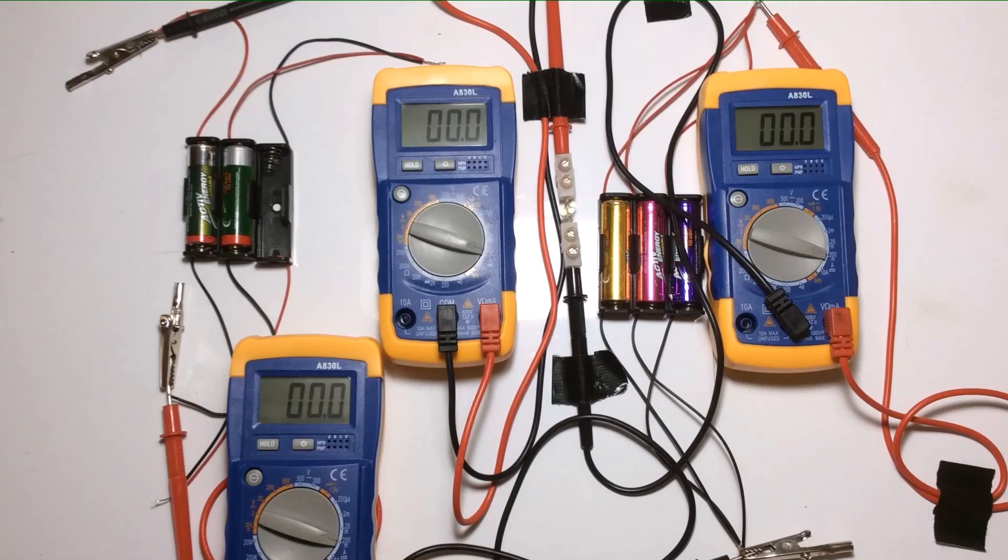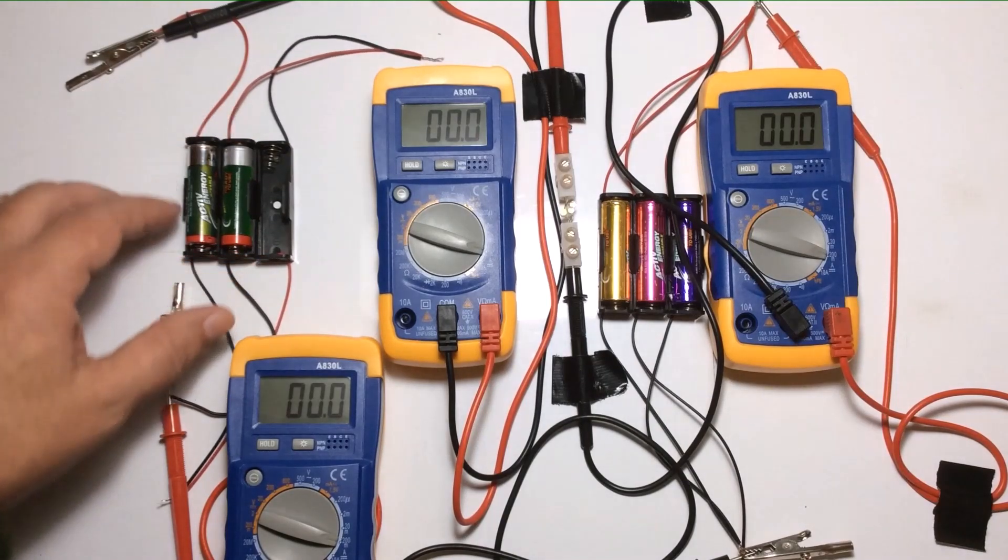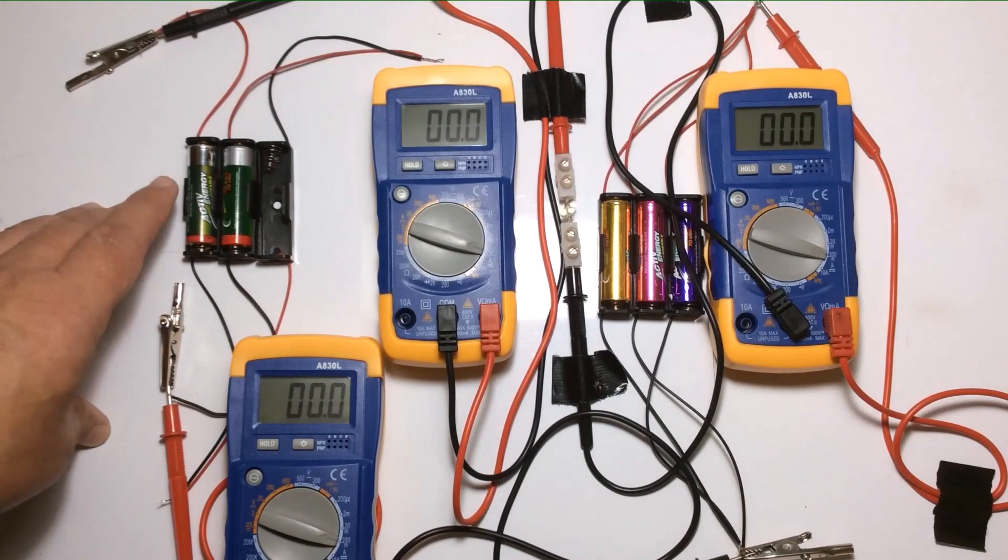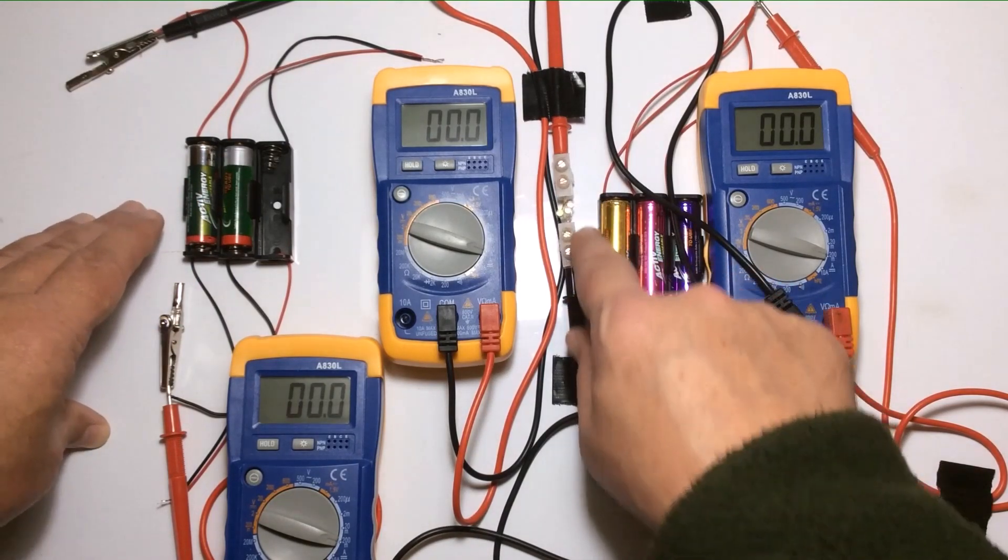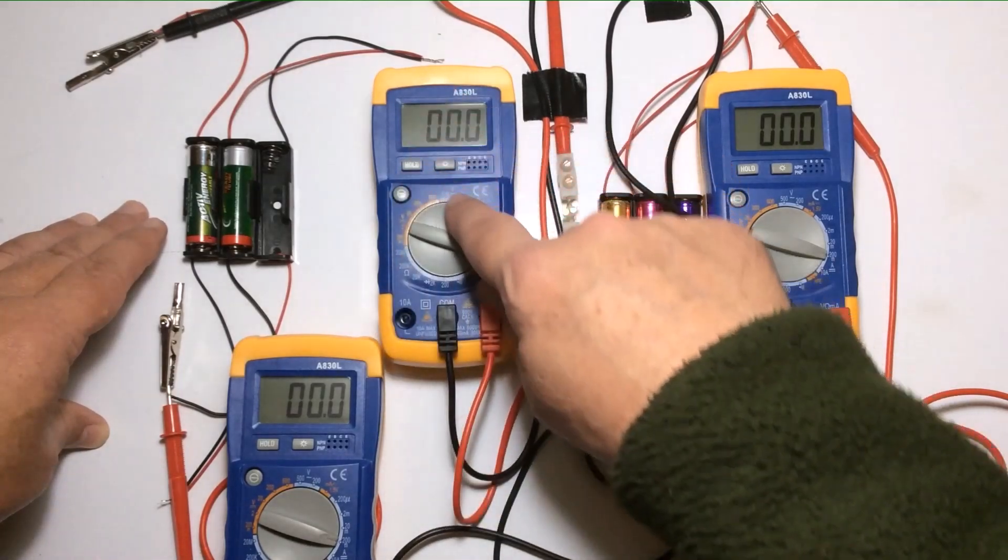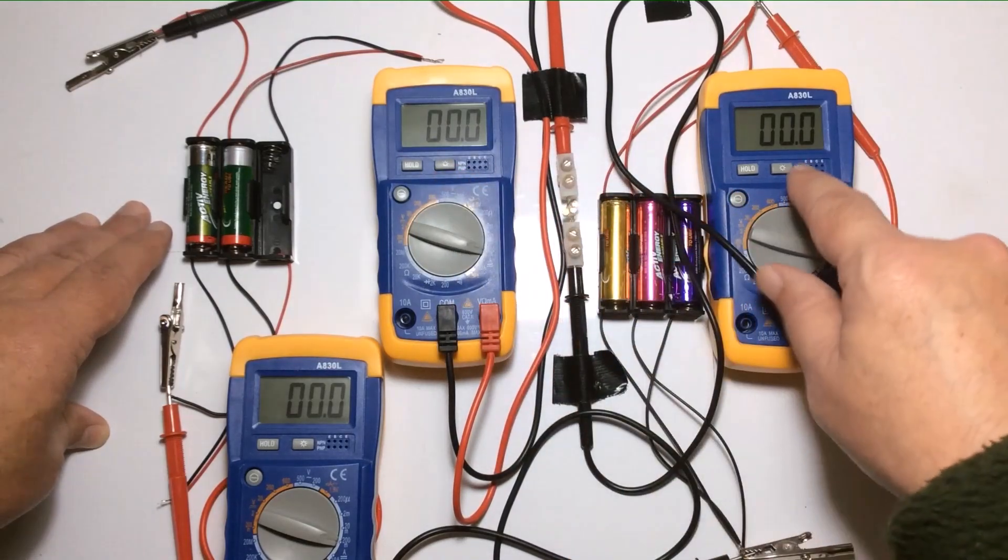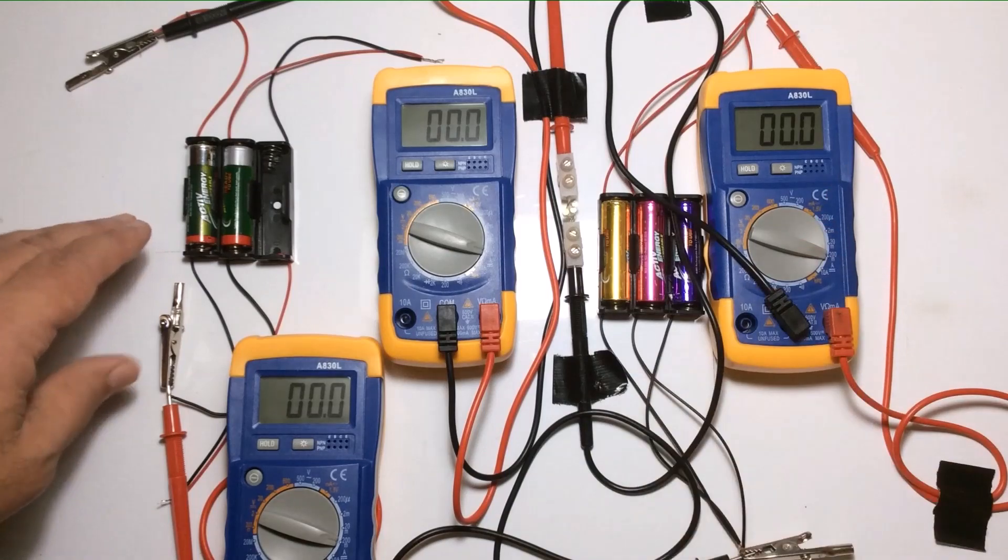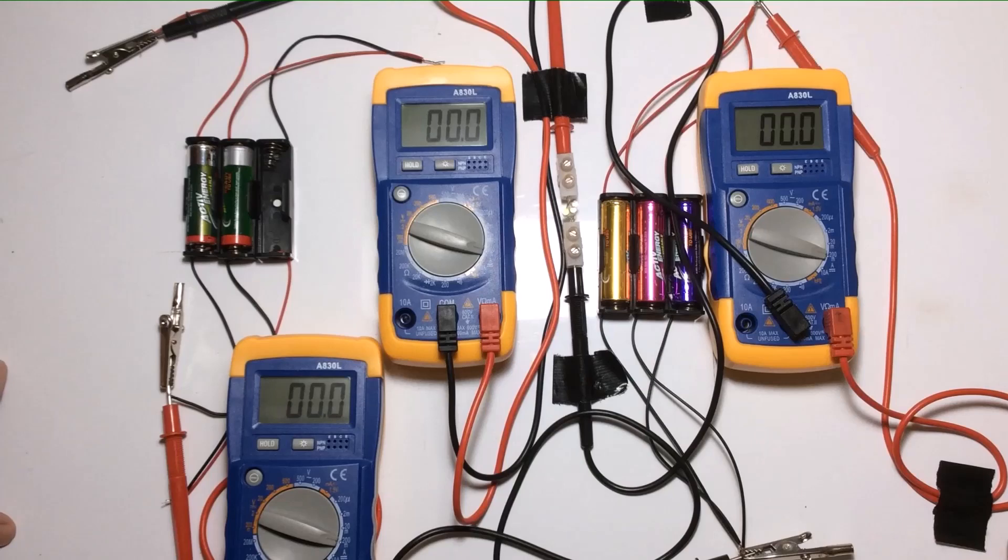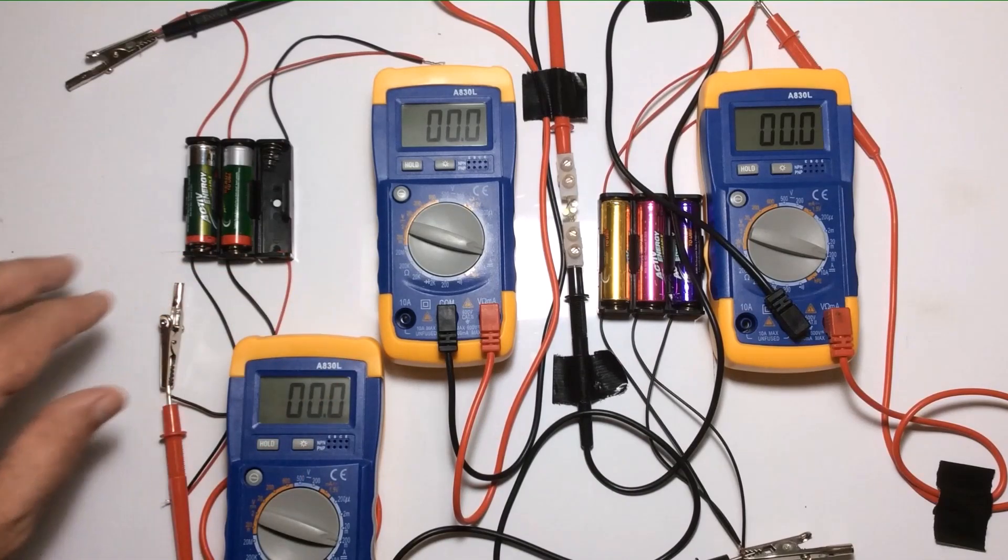So we've just seen the effect of having these three series connected batteries producing 3.6 volts and you know how bright that makes the three LEDs with the input meter to the LEDs and then the output meter from the LEDs and running back into the same series batteries.